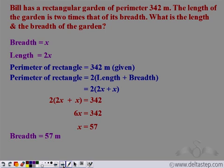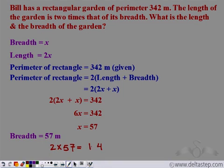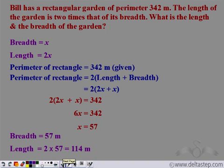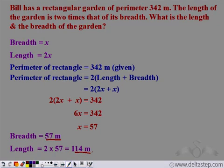Length is 2 into x, so it is 2 into 57, which equals 114 meters. So breadth is 57 meters and length is 114 meters. You can find the perimeter and check — you will get it to be 342 meters.